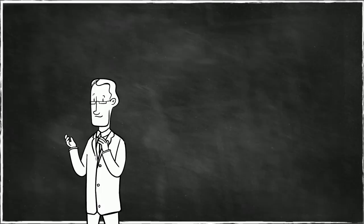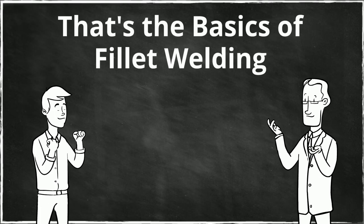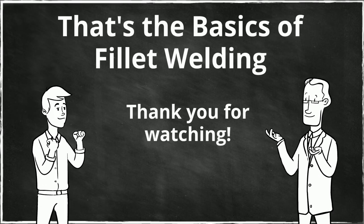Typically a wire wheel combined with a chipping hammer to get rid of the excess slag coating on top which not only protects the weld but helps to float out surface impurities. And that's some basics of fillet welding. Thank you for watching!